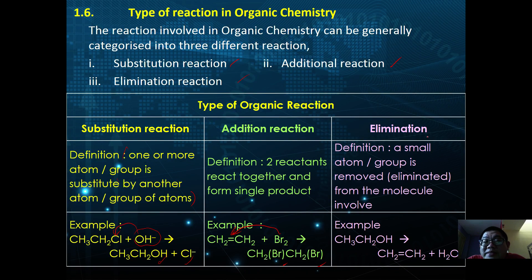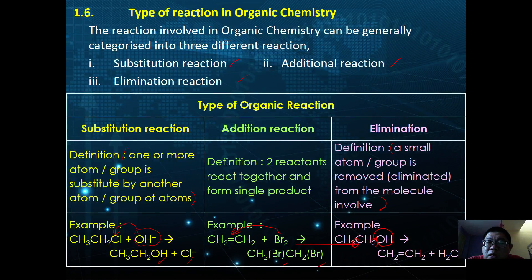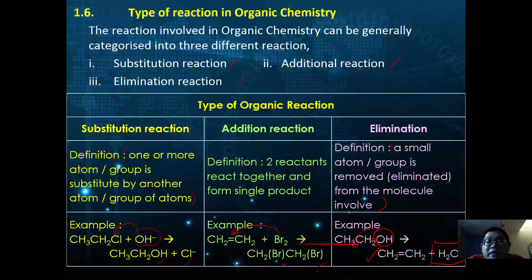In an elimination reaction, a small atom or group of atoms is removed from the organic molecule. For example, in dehydration of alcohol, a hydrogen from one carbon and the hydroxyl group from another carbon are eliminated to form a water molecule, producing an unsaturated hydrocarbon — an alkene.